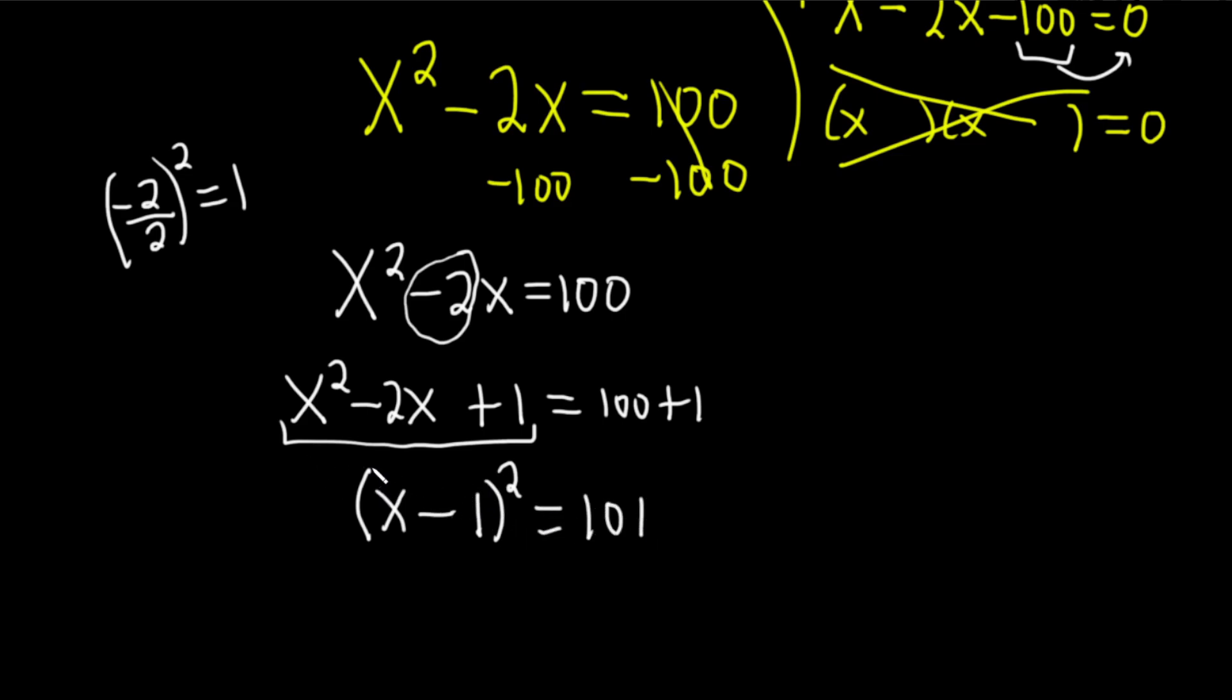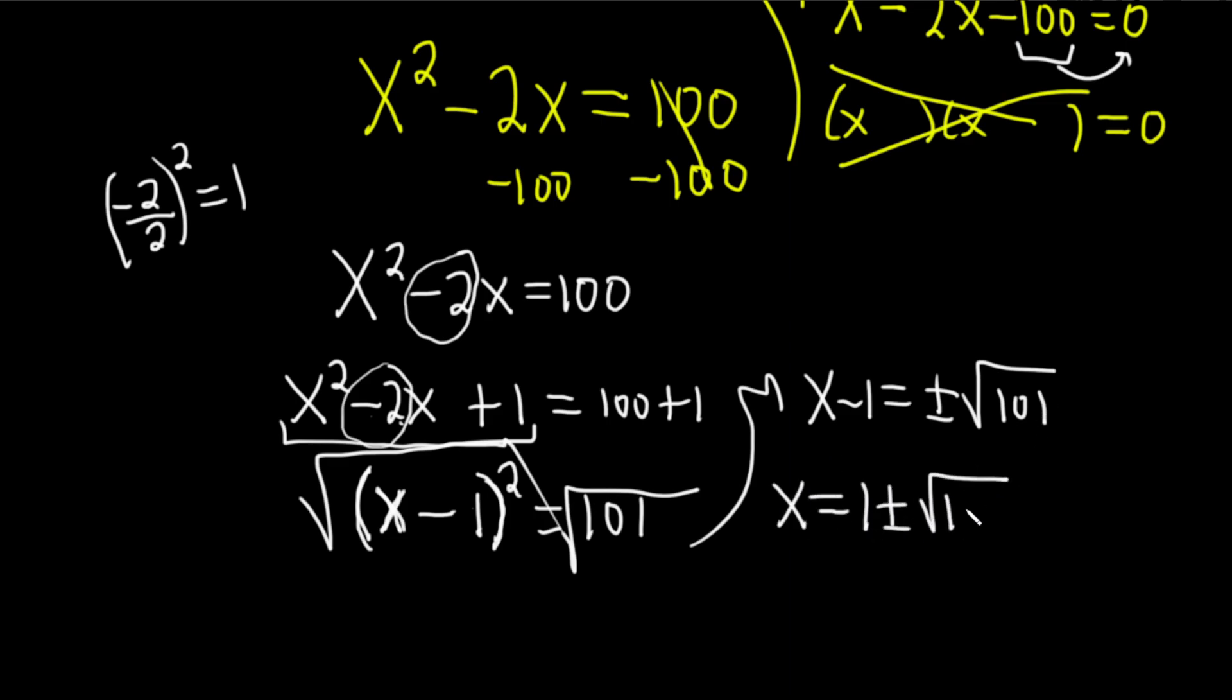It's going to be (x minus 1) squared equals 101. And the way I know that is I just know there's a parenthesis, there's a 2, there's an x, it's just all memorized. And then you take this number and you divide it by 2, and that gives you 1, and then you keep the sign. And now we have this, we take the square root of both sides. When we do that, we get x minus 1 equals plus or minus the square root of 101. Add 1 to both sides, so we get 1 plus or minus the square root of 101.